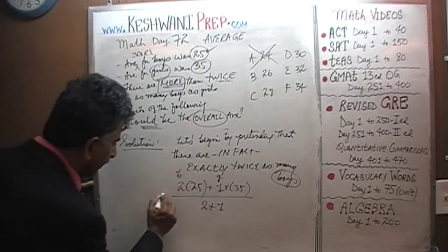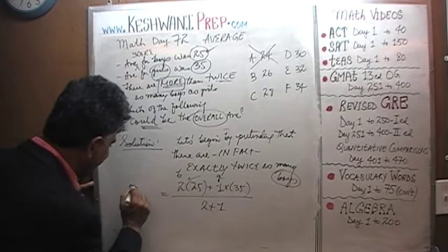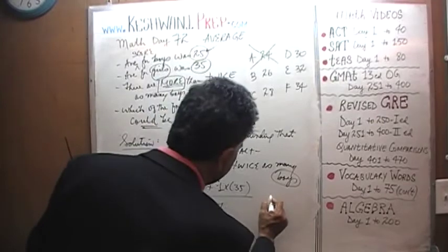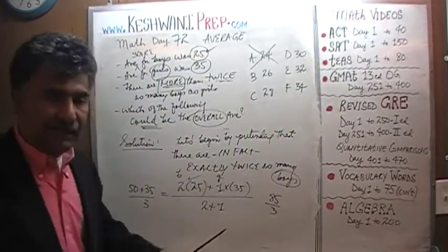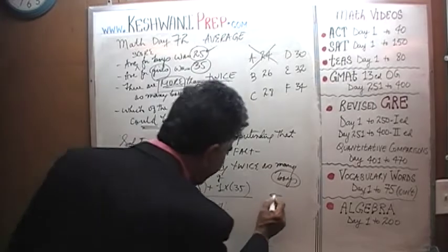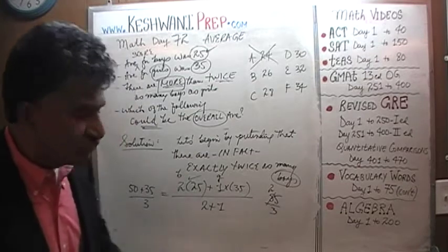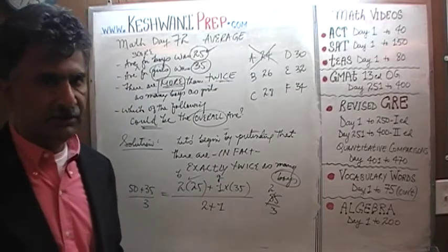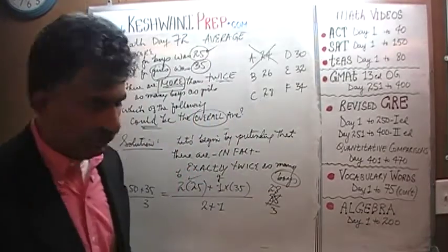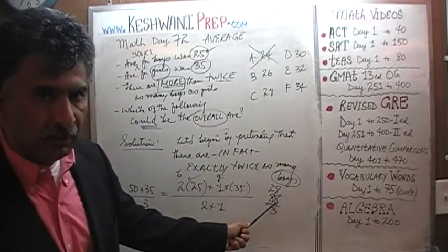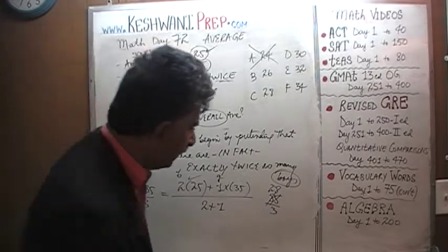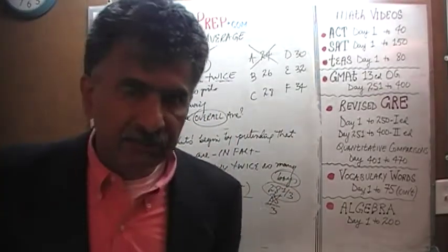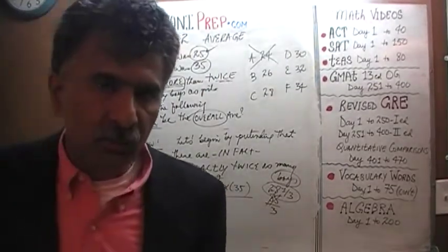Let's see what the average would be. We get 2 times 25, which is 50, plus 35, over 3 — that gives us 85 over 3. Let's calculate: 3 goes into 8 twice (2 threes are 6), remainder 2 joins the 5 to make 25. 3 goes into 25 eight times (8 threes are 24), with a remainder of 1. That remaining 1 is divided by 3, so the overall average is 28 and a third — or 28.333.